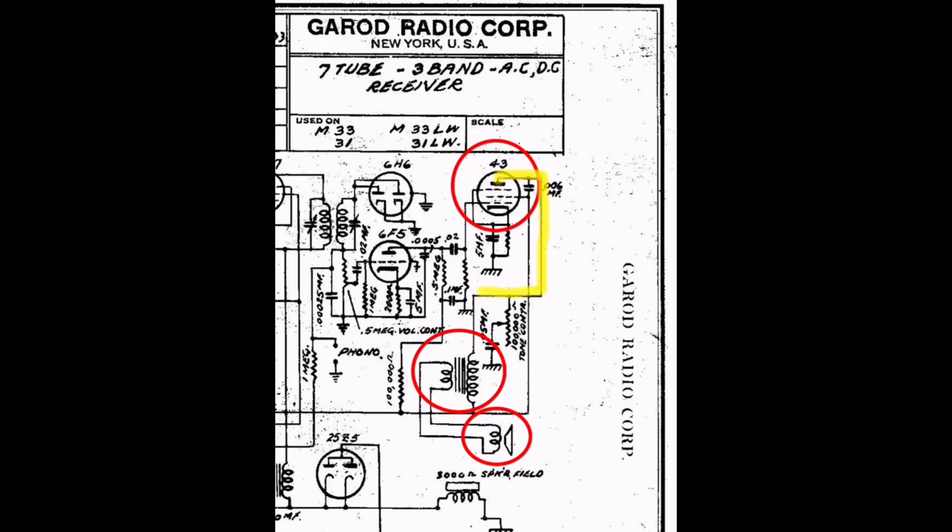And here I'm going to draw out my connection points. Again, I'm going to come from the plate itself through the primary, and you can see me looping back up here to the grid on the 43 tube.